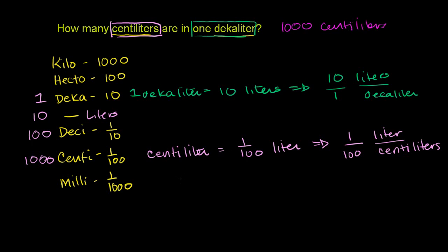The other way to do it is to convert a decaliter to liters, then convert liters to centiliters. Whenever you do unit conversions, make sure it makes sense — sometimes people divide instead of multiply and get something like '1 decaliter equals one-thousandth of a centiliter.' But a decaliter is a much larger unit than a centiliter, so 1 decaliter has to be a large number of centiliters. Always do that reality check when dealing with units.